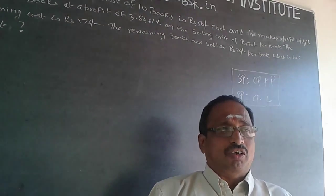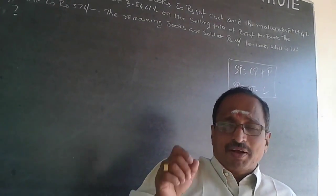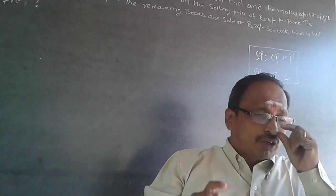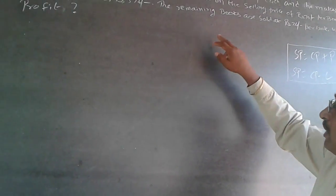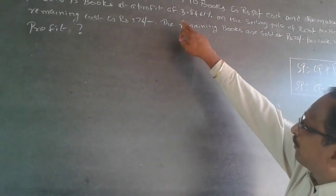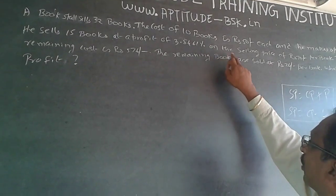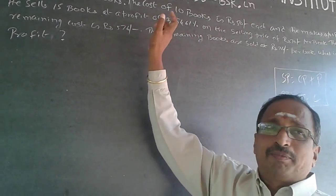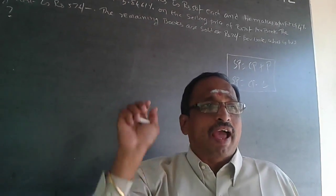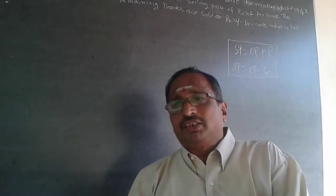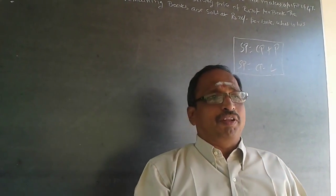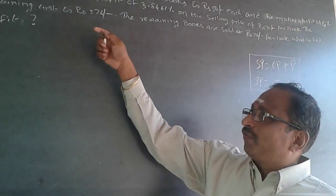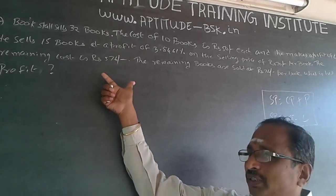Profit is on cost and loss is on cost by default. But if there is a specific reference that the profit is on something else — like in the second statement, he makes a profit of 3.8461 percent on selling price — then the default is not applicable. You have to calculate the profit on the basis of the selling price. So we need to find the cost price and selling price of all 32 books.